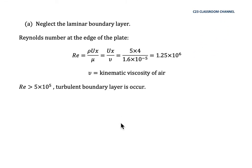For the first question, we assume the laminar boundary layer does not affect the result. Because we neglect the laminar boundary layer, we first check whether the Reynolds number at the edge of the plate exceeds the laminar limit. The Reynolds number equation is Re = ρUx/μ. Substituting the values using kinematic viscosity of air, we get 1.25 × 10⁶.